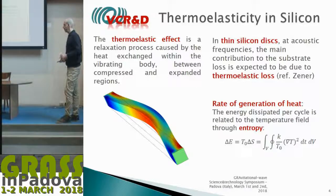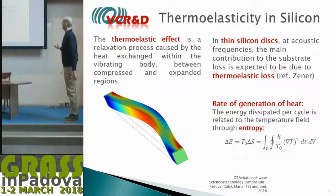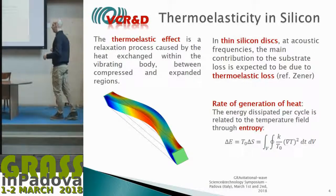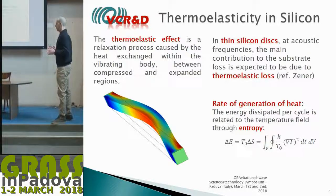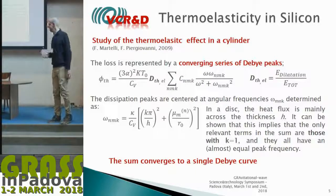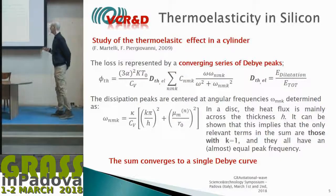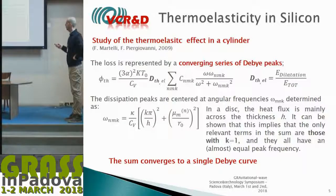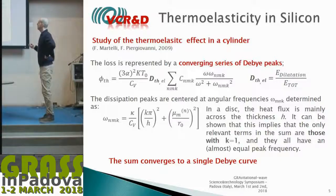The thermoelastic damping contribution can be worked out in several ways. For cylinders, we rely on a computation by Martelli and Pier Giovanni, evaluating the rate of entropy generation per cycle of oscillation, and then the amount of energy dissipated. The result is a complicated formula, but it reduces to a sum of bi-peaks—similar to the Zener thermoelastic damping formula—characterized by their peak frequency and normalization coefficients.